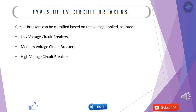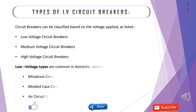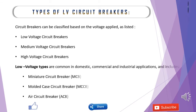This type of circuit breakers are commonly used in our domestic, commercial, and industrial applications. The different types of low voltage circuit breakers are: miniature circuit breaker (MCB), molded case circuit breaker (MCCB), and air circuit breaker (ACB).